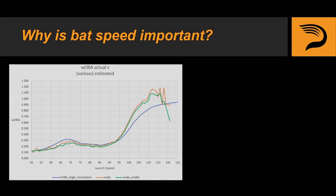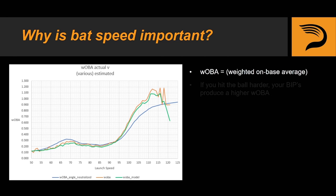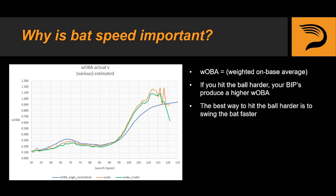This is a screenshot from a Tom Tango blog post. On the y-axis is wOBA, or weighted on-base average, a measure of your offensive production — the higher the better. On the x-axis is the exit velocity of a batted ball. Being able to hit the ball harder increases your production on batted balls. The reason for this is that hitting the ball harder improves your chances of hitting the ball over the fence and decreases the defensive chances of making a play. Hitting the ball harder is advantageous for any hitter, and the best way to hit the ball harder is to swing the bat faster.